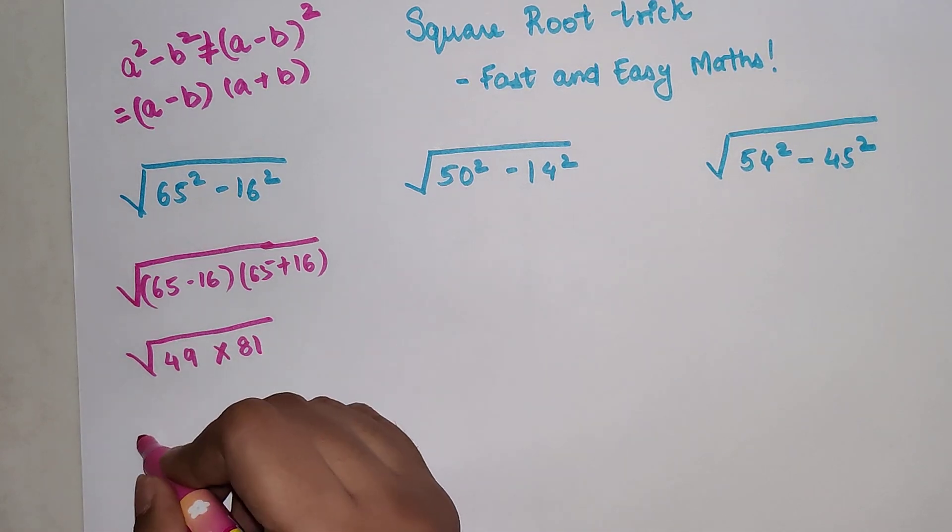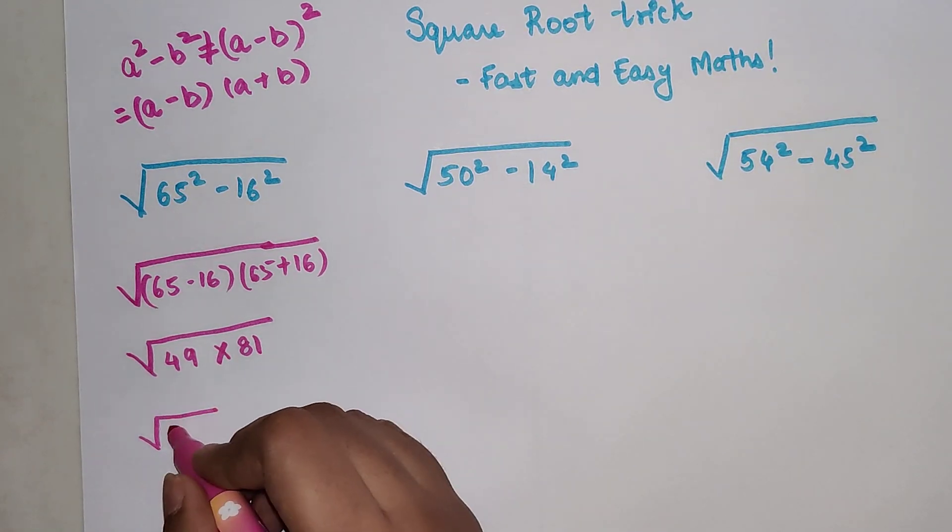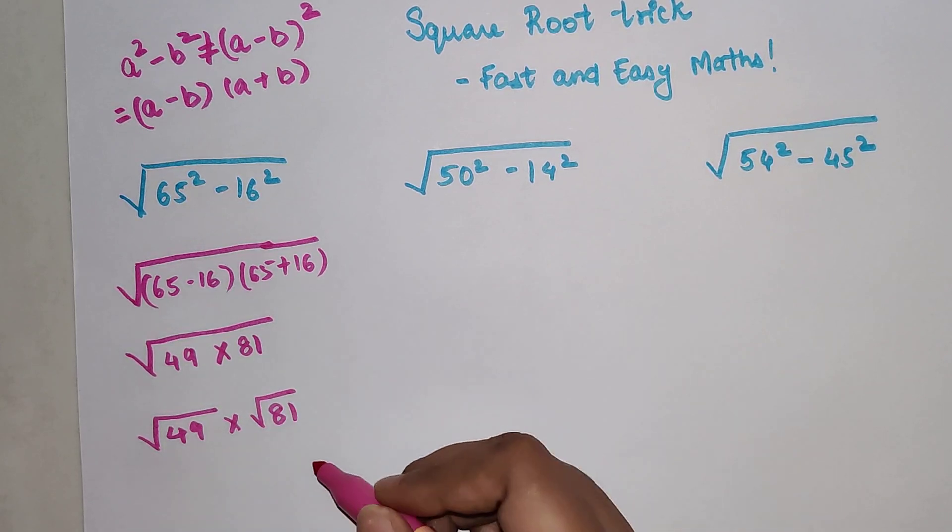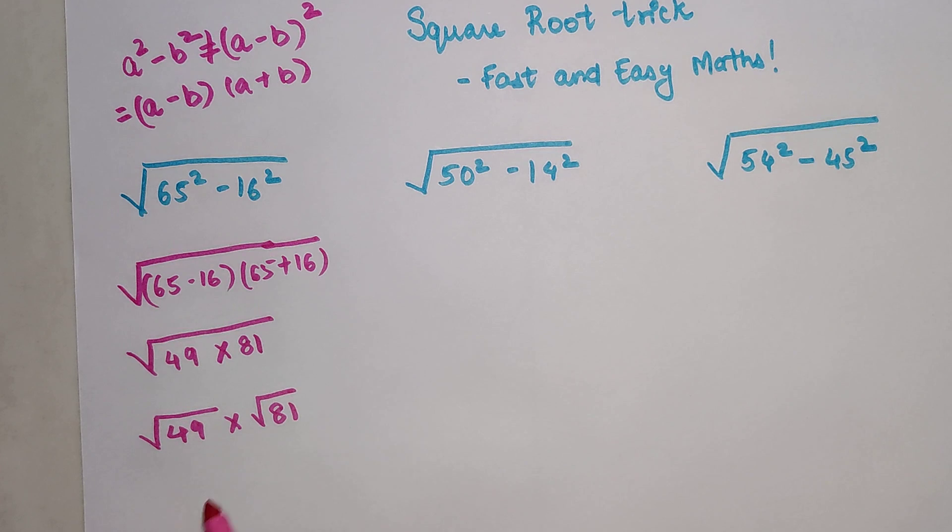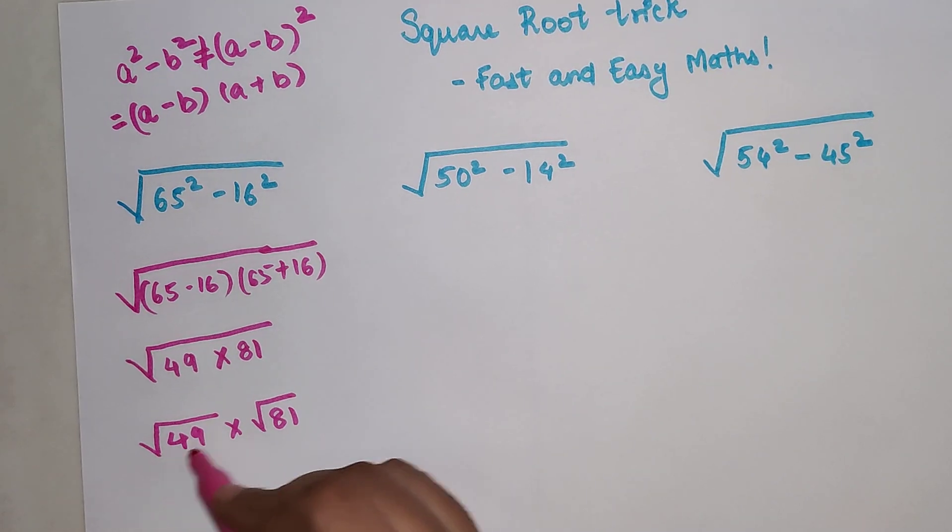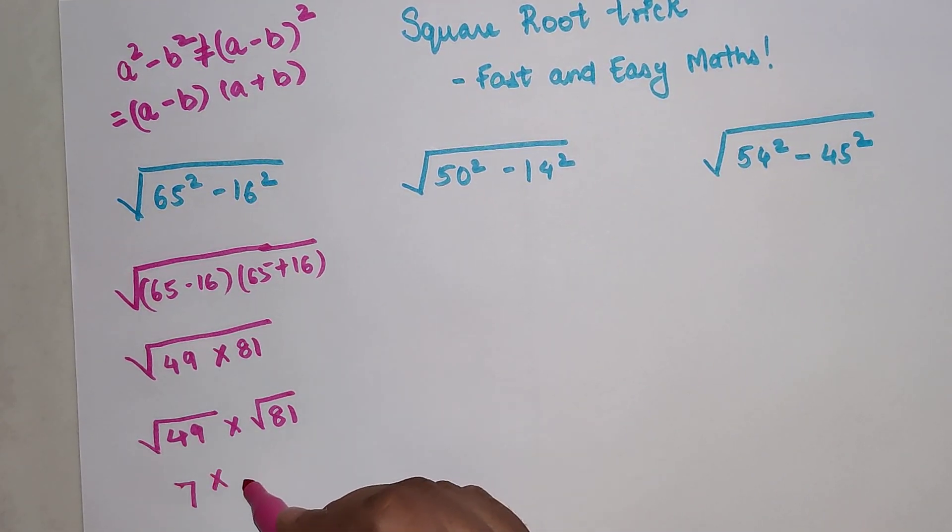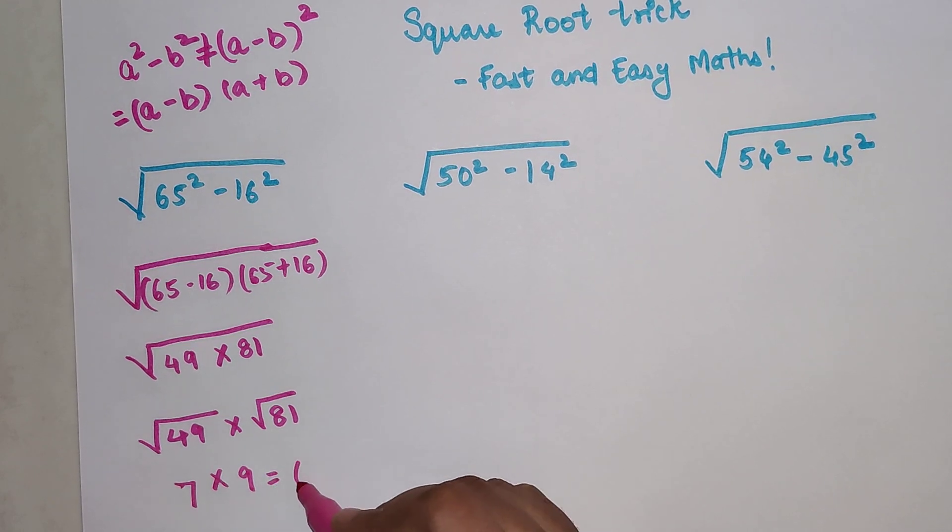Now this can be written as √49 times √81. I can break the square root because there is a multiplication sign. If there was a plus or subtraction sign, you cannot break the square root. √49 is 7, √81 is 9, so your final answer is 63.